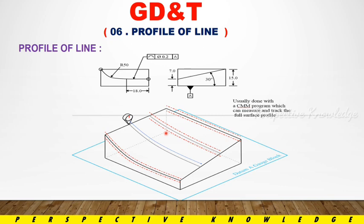The profile of line is the profile of surface for the particular line. The values are correct. The profile of line is within the upper specification limit and lower specification limit — the profile of line is acceptable. This is usually done with a CMM program which can measure and track the full surface of a profile.